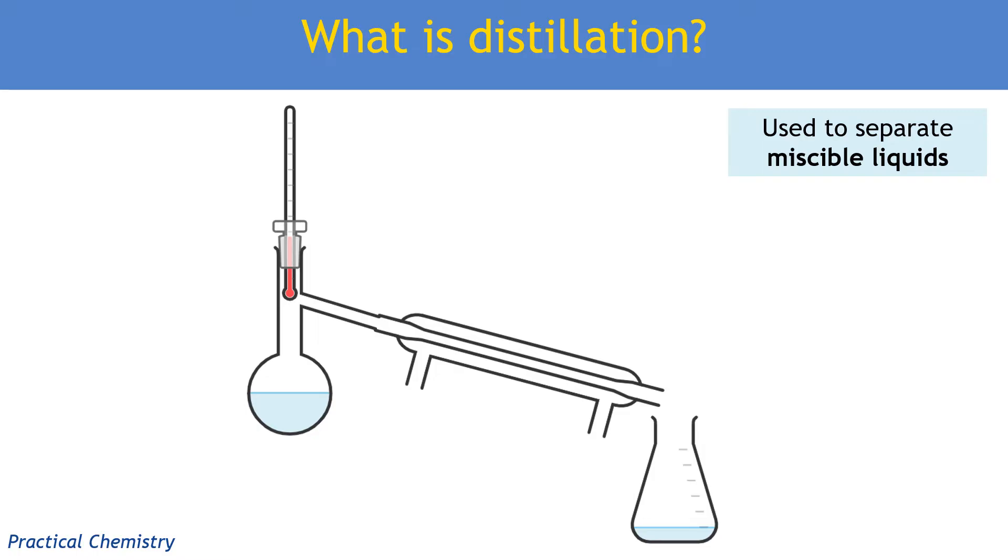This would be our distillation apparatus in the lab. We've got a condenser, which is a glass tube and has a supply of cold water running around the outside of it. Water goes in at the bottom and out at the top. At the top of the apparatus, above the flask, we're going to have a stopper to stop any gases escaping that way, and we're going to have a thermometer. Notice that the end of the thermometer is at the entrance to the condenser. It's not in the liquid.